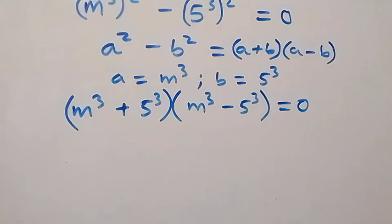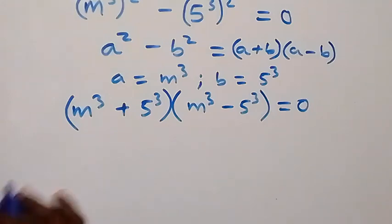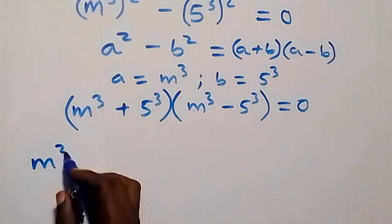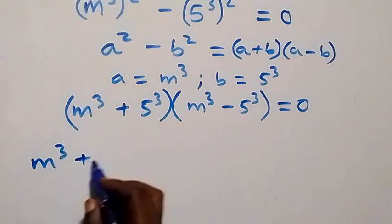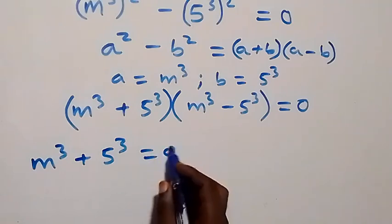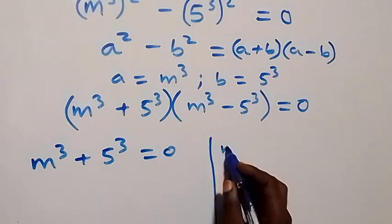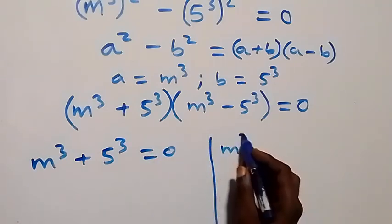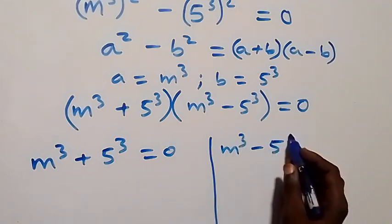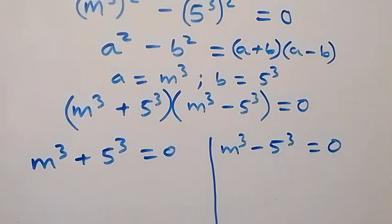And here we have two cases. The first one: m cubed plus 5 cubed equals to 0, or we have m cubed minus 5 cubed equals to 0 from here.